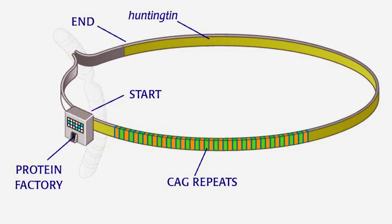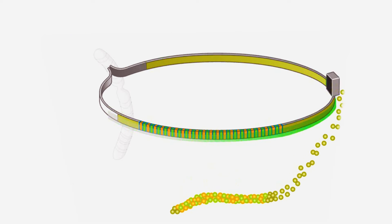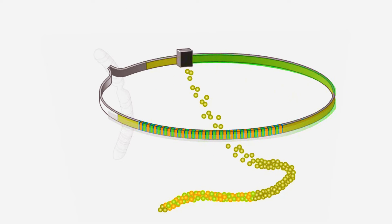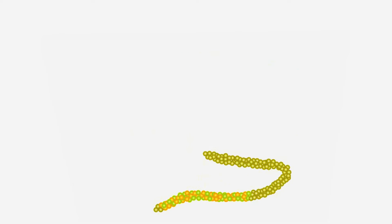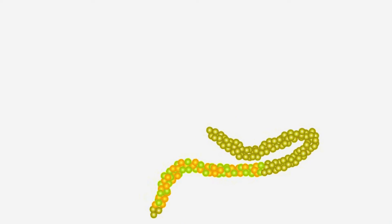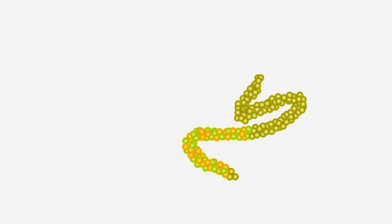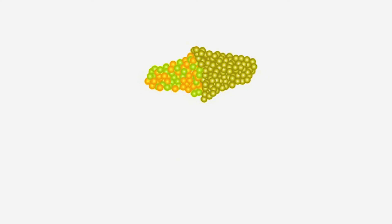Each CAG repeat in the gene adds a particular amino acid, glutamine, into the protein. If there are 41 CAG repeats, there will be 41 glutamines in the protein. With so many glutamines, the mutant protein folds into a different shape than normal.